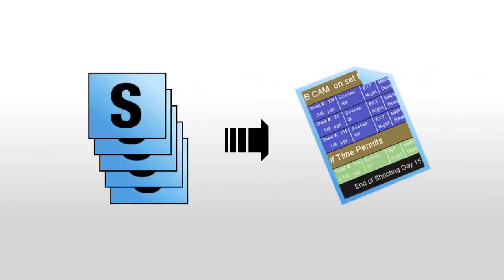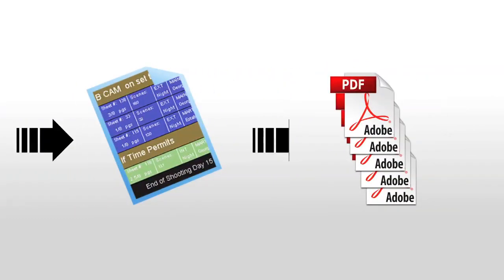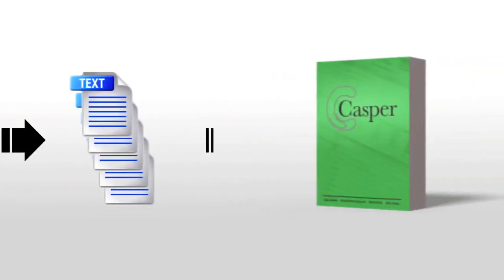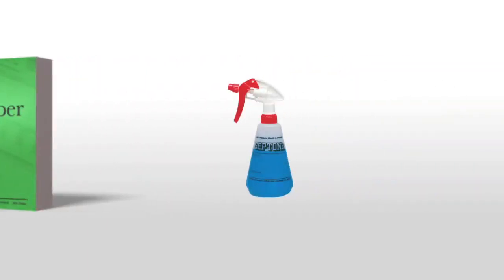First, we're going to be importing strip layouts into MovieMagic Scheduling. Next, we're going to be printing strip layouts to five different PDFs. Third, we're going to copy text from those five PDFs into five different text documents. Then we're going to import those five different text documents into Casper, and finally we're going to clean up that data so that it can be used properly.